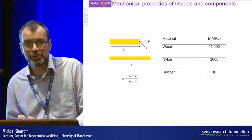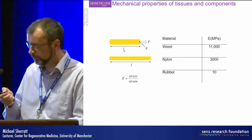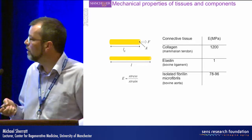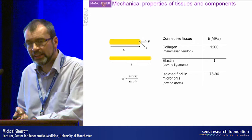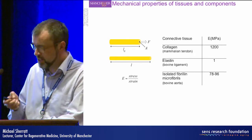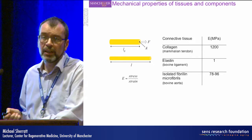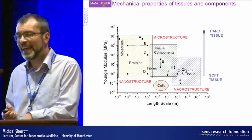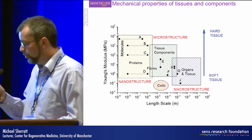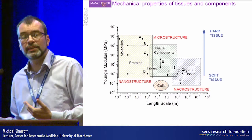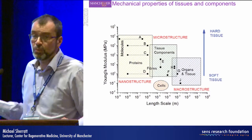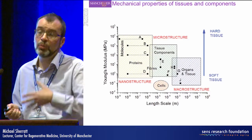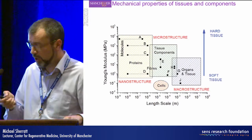Wood has a Young's modulus of 11,000 megapascals; rubber has a modulus of only 10 megapascals. For extracellular matrix proteins, collagen is a relatively stiff material with a Young's modulus of 1,200 megapascals, while elastin is highly compliant. Our measurements on fibrillin microfibers suggest they fall somewhere in between. It's also important to consider length scale — tissues and organs are highly compliant compared to the molecules from which they're made, so measurements at the micrometer scale are critical because that's the scale at which cells operate.